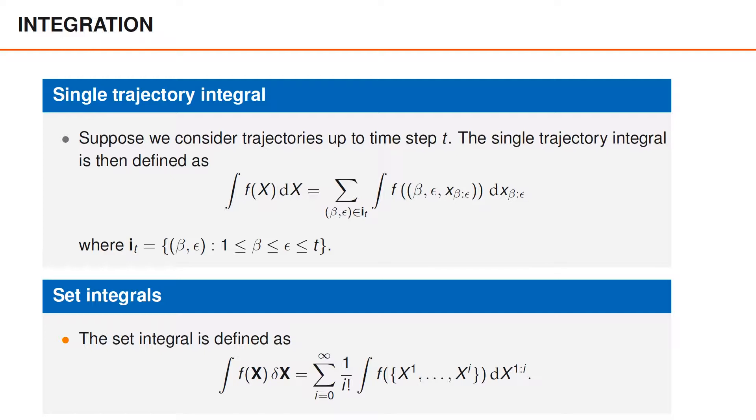That is, to compute the set integral of a function f that depends on a set of trajectories, we sum over all possible cardinalities i, from zero to infinity, of 1 over i factorial, times the integral over f of i trajectories. Again, the bottom line here is that integrals are defined analogously to before.